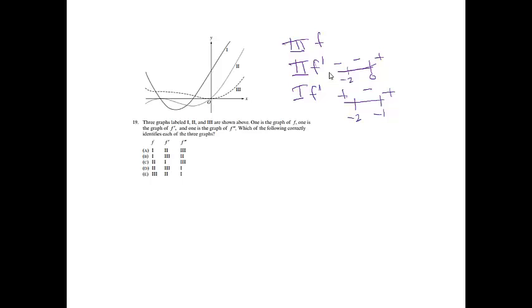Comparing F prime to F double prime: the slopes on F prime should be going up, then down, then up — and they do exactly that. So the answer is 3, 2, and 1, which is choice E.